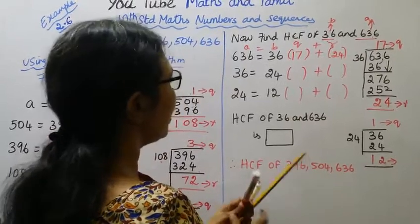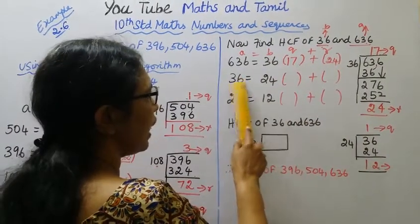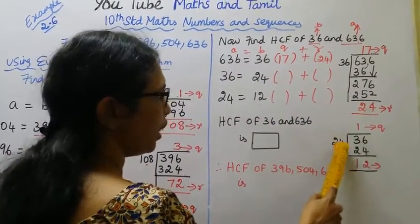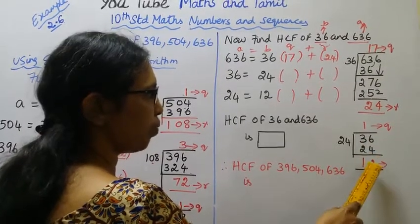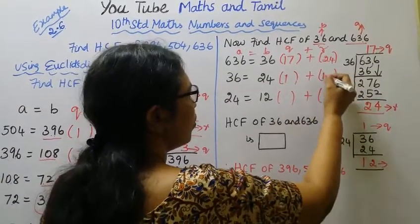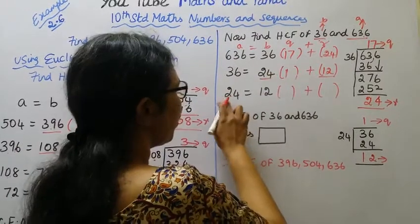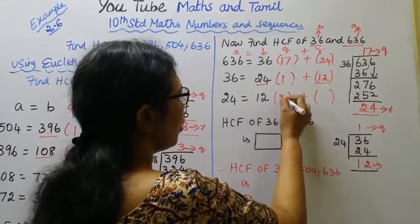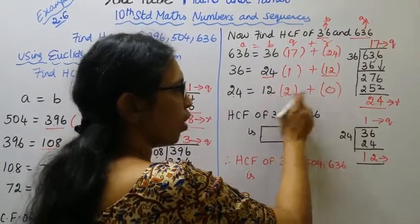Now compare 36 and 24. Divide 36 by 24: 1 into 24 is 24. 36 minus 24 is 12. Quotient is 1, remainder is 12. Now divide 24 by 12: 2 times 12 is 24, remainder is 0. So the divisor is 12.